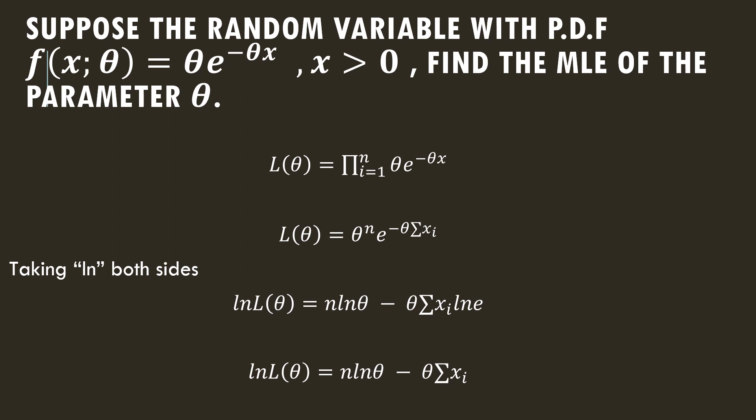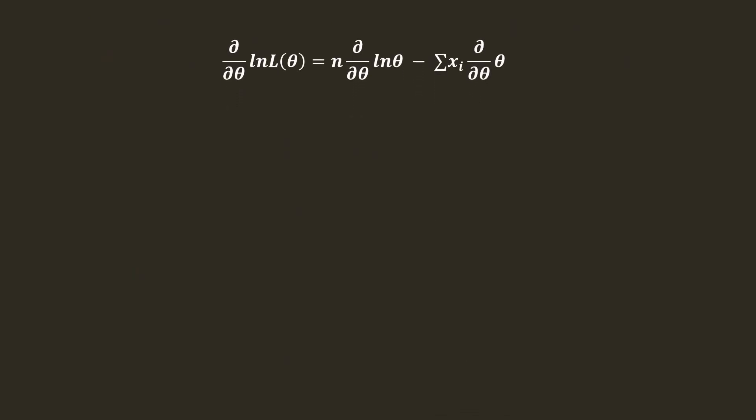Differentiating the log likelihood function with respect to θ: n is a constant, take it outside. Partial derivative of ln θ is 1/θ. Similarly, summation xi is constant, will be taken outside. The derivative of θ with respect to θ is 1.